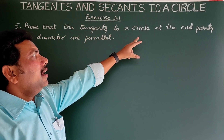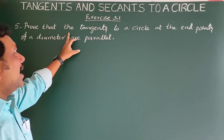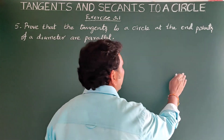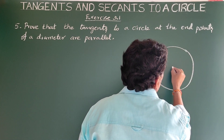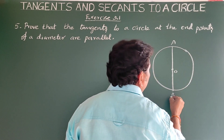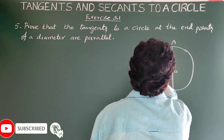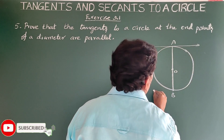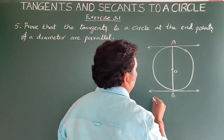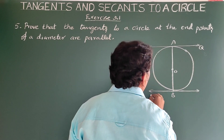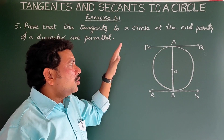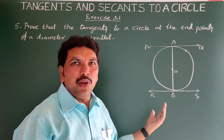Fifth question: prove that the tangents to a circle at the end points of a diameter are parallel. Draw the diagram: O is the center, AB is the diameter, and PQ and RS are tangents drawn at the end points of the diameter. We have to prove PQ is parallel to RS.